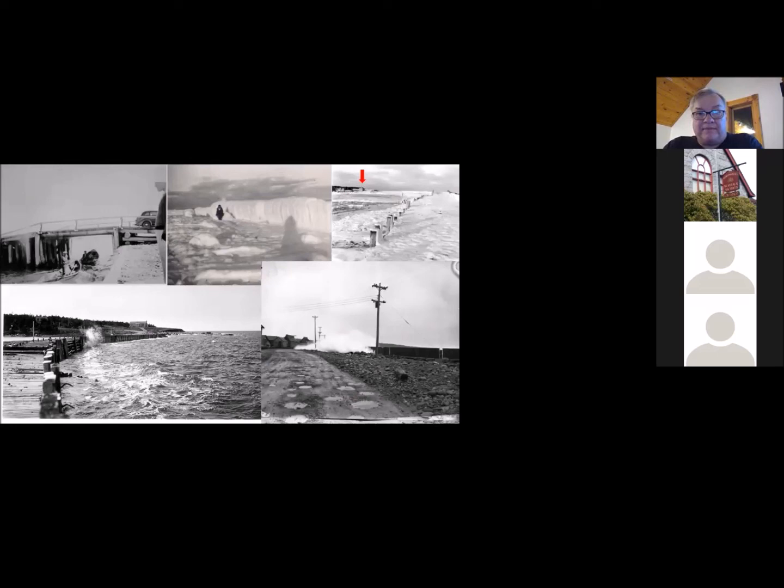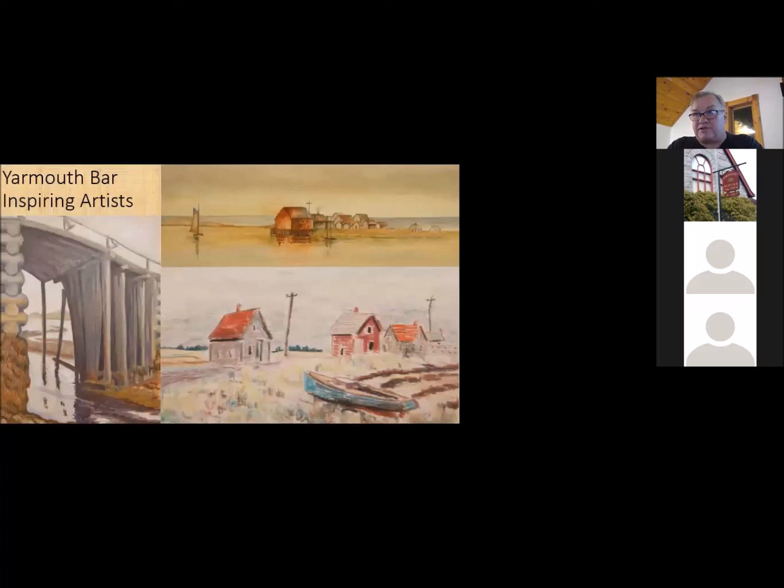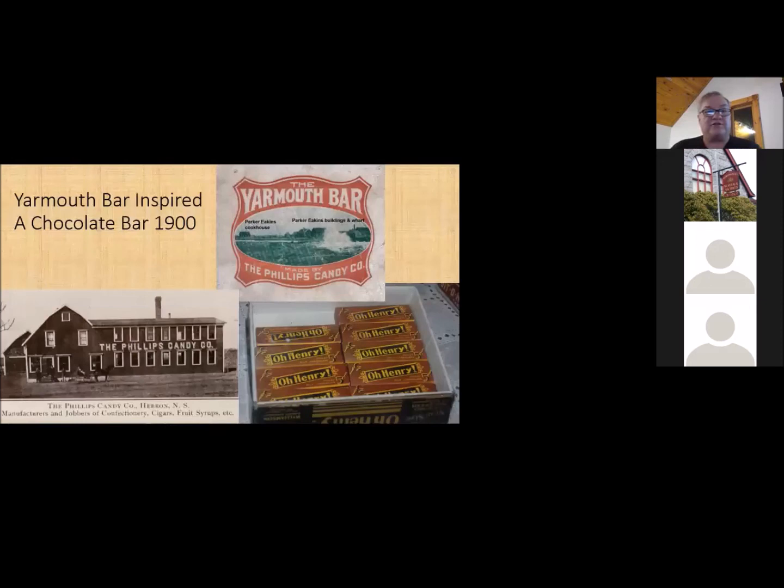Yarmouth Bar is an inspiring place. Through the years, it's inspired a number of artists. Even today in the summer times, it makes me very happy to see folks down there on the side of the road painting scenes from the bar. Artwork continues to be produced. The other neat thing is Yarmouth Bar actually inspired a chocolate bar. This is the actual wrapper from the Yarmouth Bar. Back in the days of the early 1900s, you got your chocolate bars in little cardboard boxes. This is the wrapper that would have been on the box that held your Yarmouth Bar. It was made by the Phillips Candy Company up in Hebron.